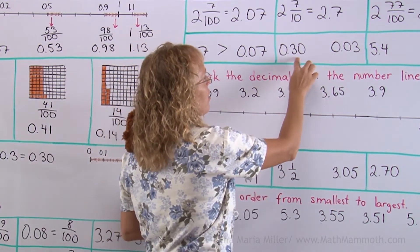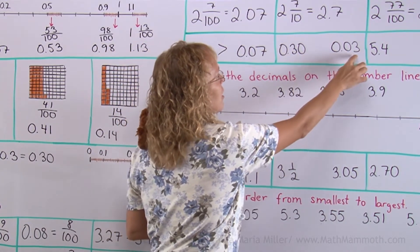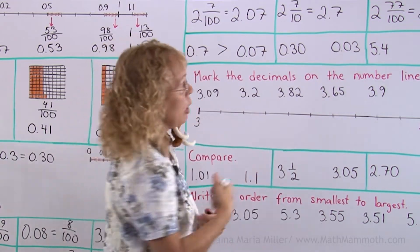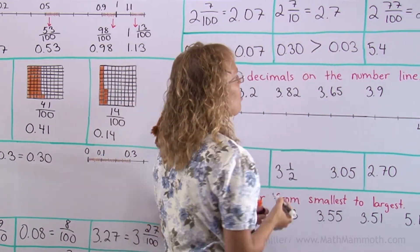You can think the same way here. Here's 30 hundredths and 3 hundredths. Well, it's easy. 30, of course, is more than 3.